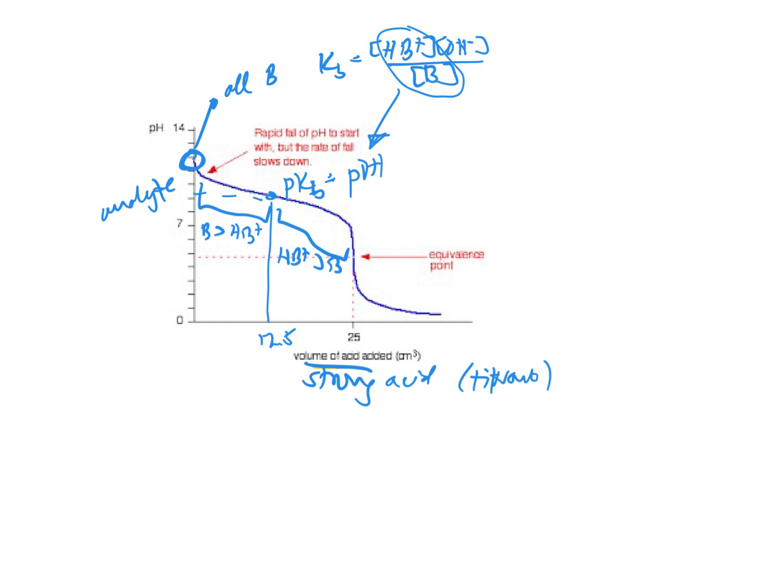The College Board hasn't asked about this a lot lately, but on both graphs, whether this one or the one on the previous slide, you do want to think about what indicator you could choose to show the results of this. You simply want an indicator that changes its pH in that steep part of the curve. So in this case, anywhere from a pH of about three or four to about six or seven. If it changes around there, you know that you were really close to the equivalence point because it doesn't take very much volume of your titrant to cause a gigantic change in pH.